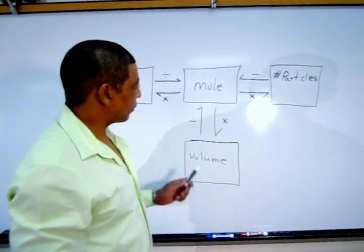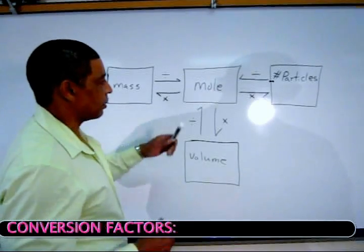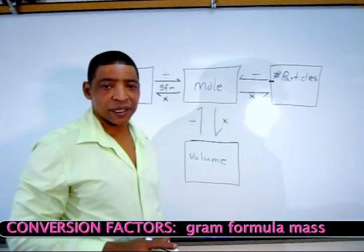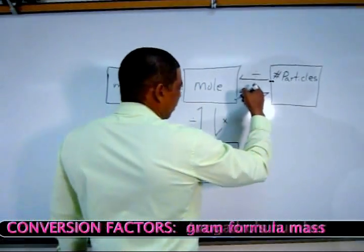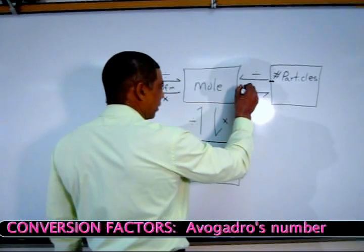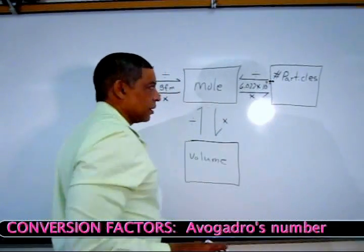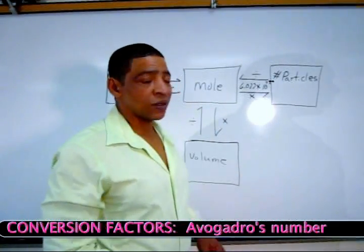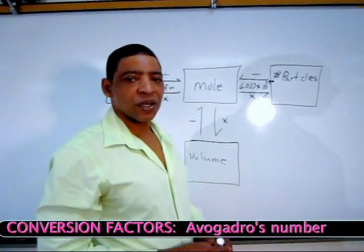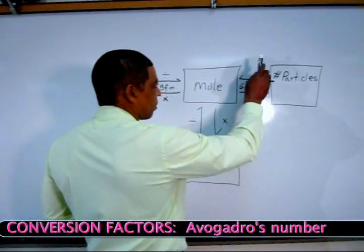Now we must write conversion factors between the boxes. The conversion factor between the mass and mole will be the gram formula mass, or GFM, also known as molar mass. The conversion factor written between the mole and the particle box will be Avogadro's number, which is 6.022 times 10 to the 23. This may represent atoms or molecules, but we simply say particles, so the units will be particles per mole.